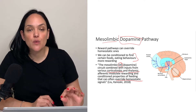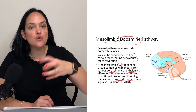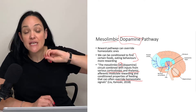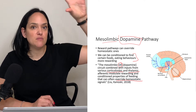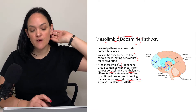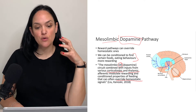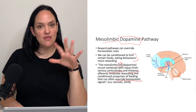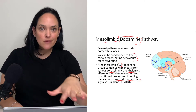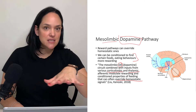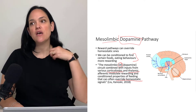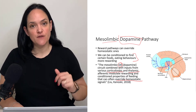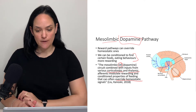This mesolimbic reward pathway, which also receives sensory information and prefrontal cortex input, can override those homeostatic nutrient-sensing and energy-sensing pathways to promote higher feeding, and in individuals with obesity, higher weight as well.